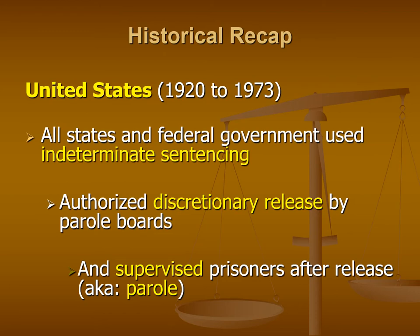For our historical recap about the methods of release from prison, we're going to focus primarily on the period from roughly 1920 to the mid-1970s within the United States. This era was really important because it was sort of the height of the rehabilitation approach within our correctional system. During this time period, all states in the U.S. as well as the federal government used what is known as indeterminate sentencing, meaning that when an individual was convicted of a felony offense and sentenced to prison, they were given an indeterminate sentence.